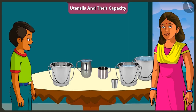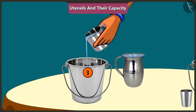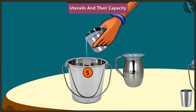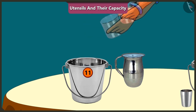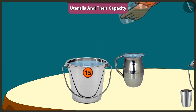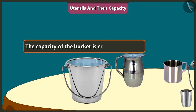Come on, let's fill the bucket using a mug. One, two, three, four, five, six, seven, eight, nine, ten, eleven, twelve, thirteen, fourteen, fifteen mugs of water filled up the whole bucket completely. The capacity of this bucket is equal to fifteen mugs of water.